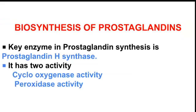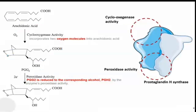Phospholipase A2 acts on the membrane phospholipid, cleaves it, and forms arachidonic acid. Then sequential enzymatic steps take place and prostaglandin is formed. The key enzyme in prostaglandin synthesis is prostaglandin H synthase, which has two activities: cyclooxygenase activity and peroxidase activity.